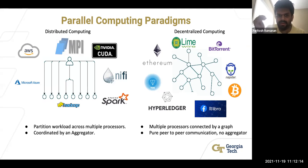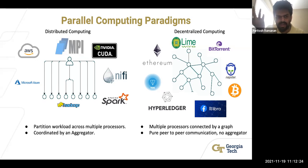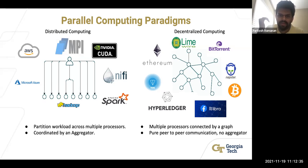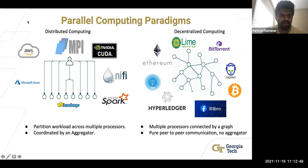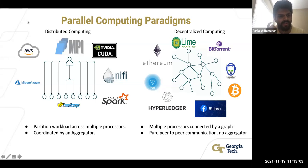This distributed model fits frameworks like Hadoop, Spark, HPC with MPI, CUDA on GPUs, AWS, or Azure. On the other hand, decentralized computing also exists as another paradigm. Decentralized computing is not as common, and the main reason is that architecting and orchestrating applications without a central coordinator is actually very hard.